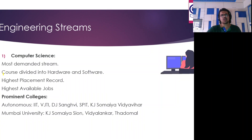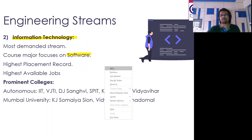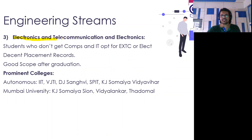Quick recap of engineering streams. Computer science is the most promising stream — it covers hardware as well as software, has the highest placements, and is the most in-demand field. IT is the sister concern of CS but is only software — placements are also very good. Colleges like IIT, DJ Sanghvi, KJ Somaiya, and SPIT all have these. EXTC — Electronics and Telecommunications — also has quite good placements and a good scope after graduation.